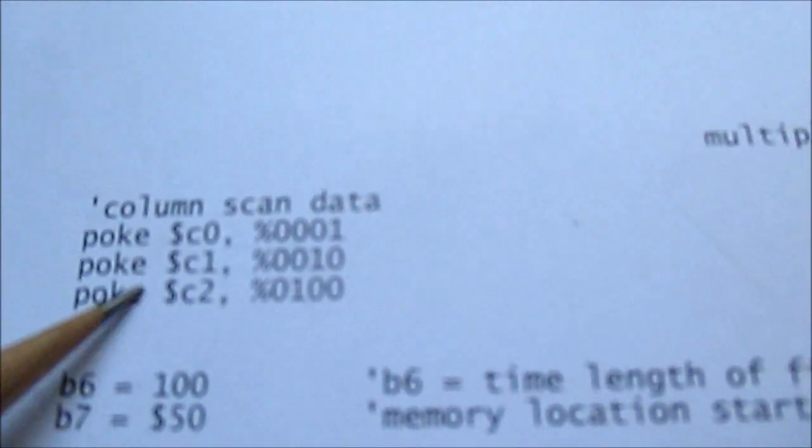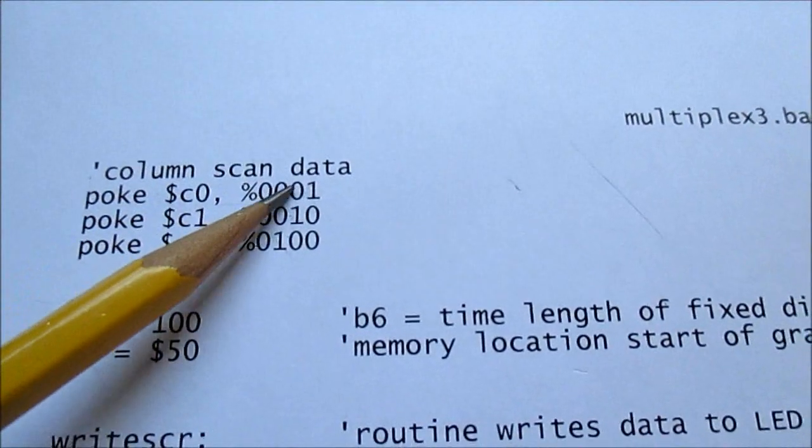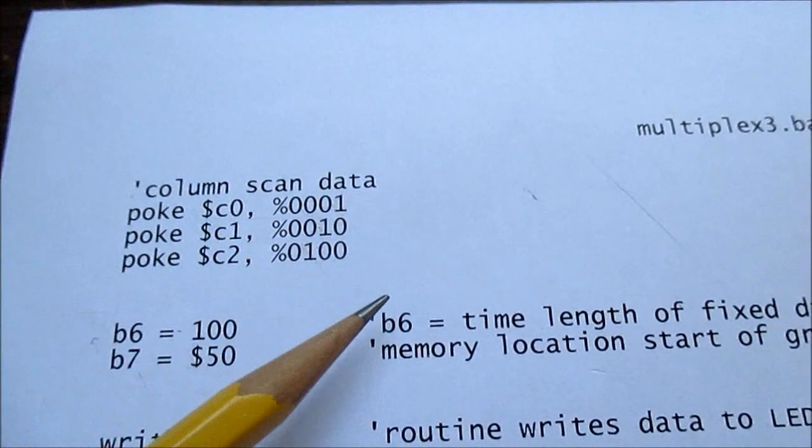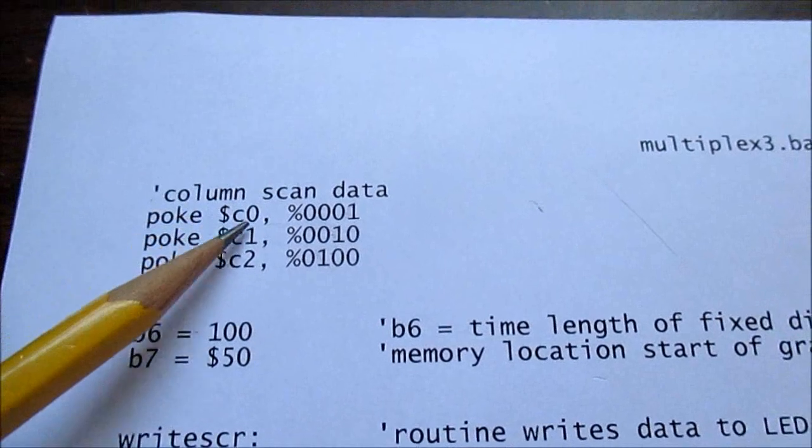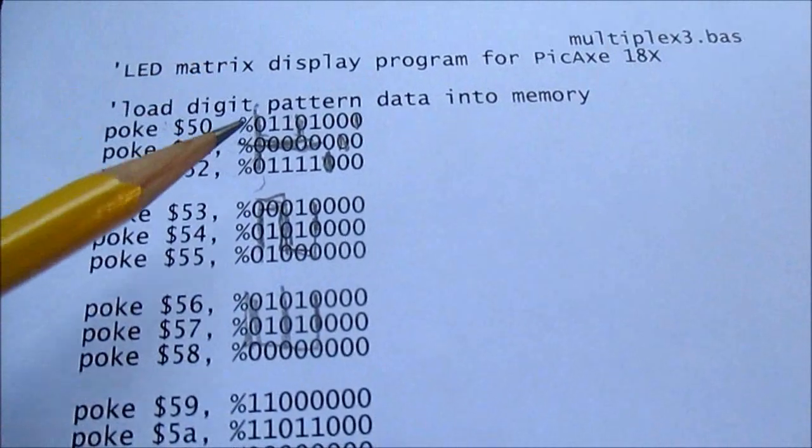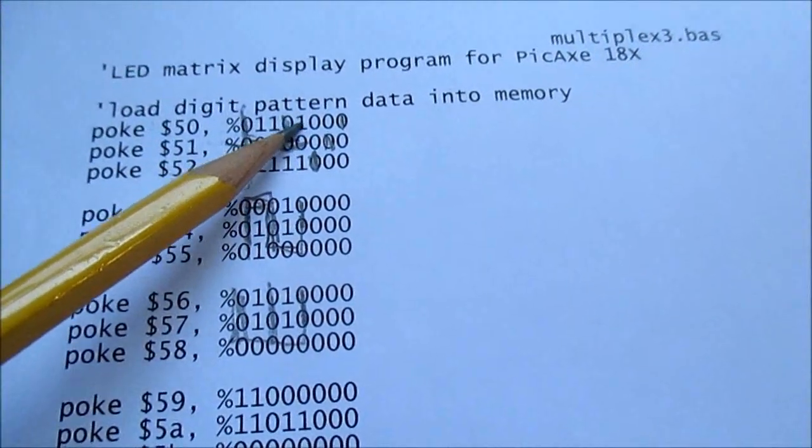And next, I put the pattern for the columns as they strobe through, go high and strobe through each column. I put that into memory. You might be asking, why not just put that here? So I have eight outputs.